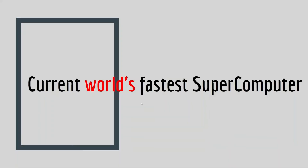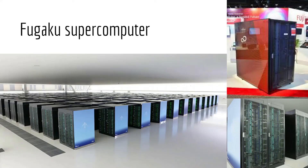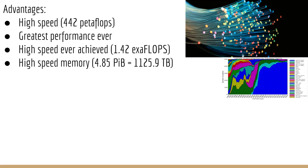Current World's Fastest Supercomputer. The current world's fastest supercomputer is Fugaku, and from its name you can guess it's from an Asian nation — Japan. Advantages of Fugaku include the world's highest processing speed of 442 petaflops, with the highest speed ever achieved at 1.42 exaflops, and 4.85 bits of high-speed memory, which equals 1,125 terabytes.